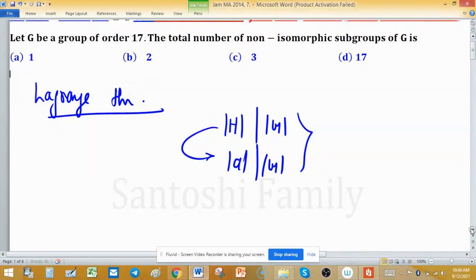Given that the order of G is 17, and we know that 17 is a prime number. Prime numbers are those numbers having only two factors: 1 and itself. So the factors of 17 are 1 and 17.